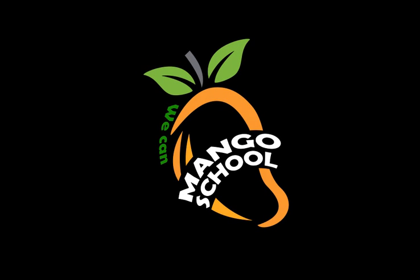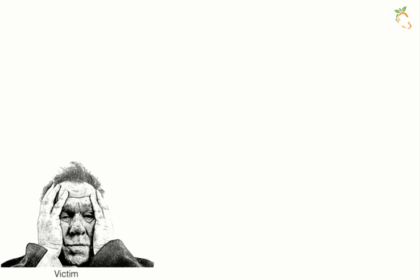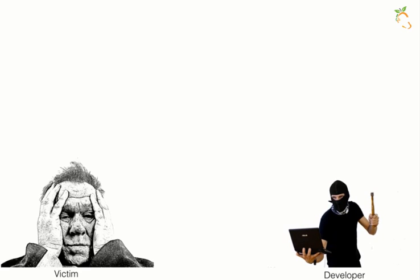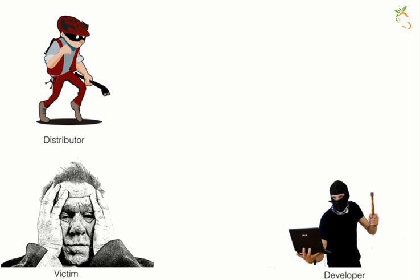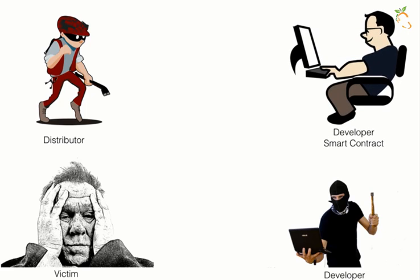Hi friends, welcome to Mango School channel. If you ever become a victim of a ransomware attack, make sure you know there are three persons who are the offenders: a developer of the ransomware, a distribution partner, and last but not least, the developer of a smart contract.